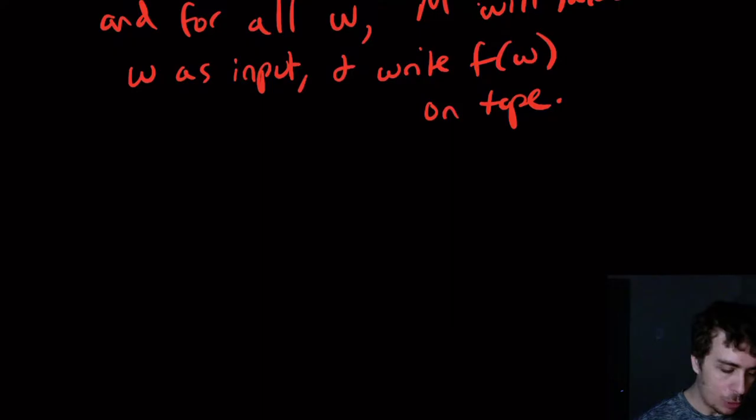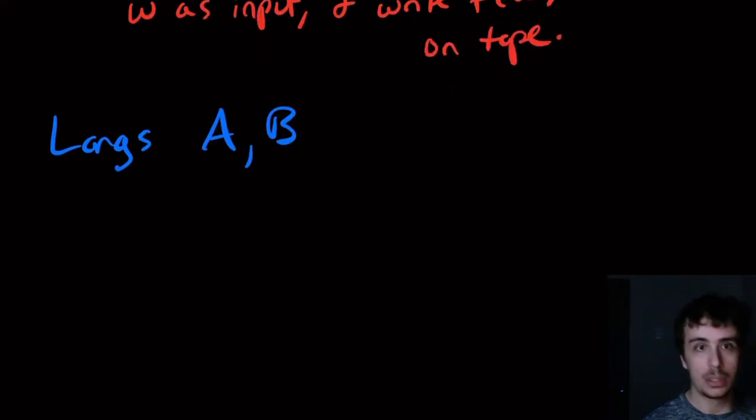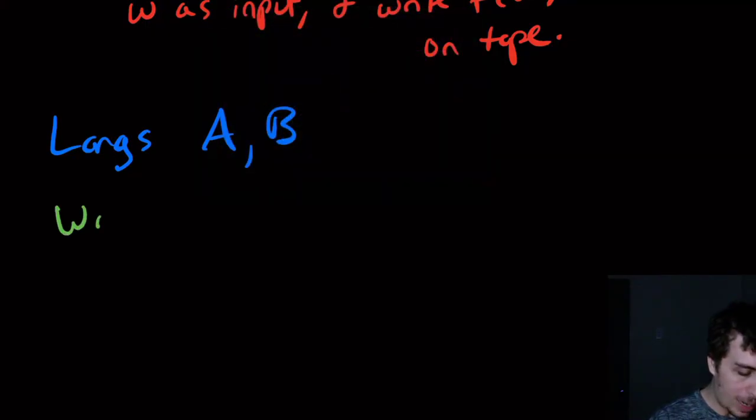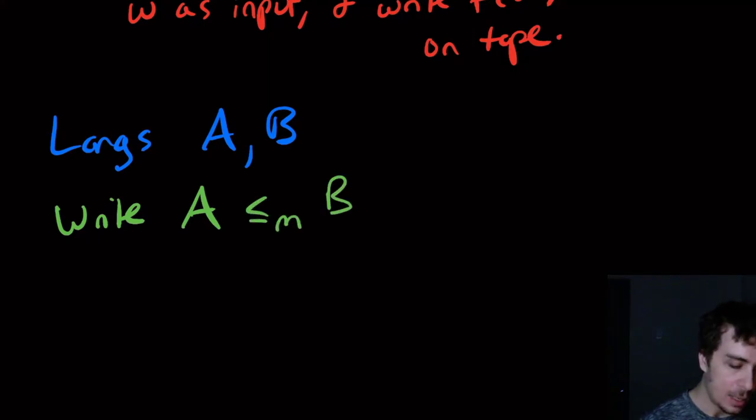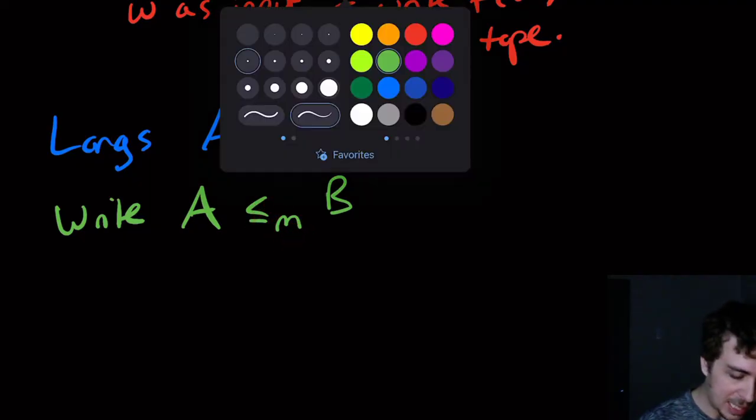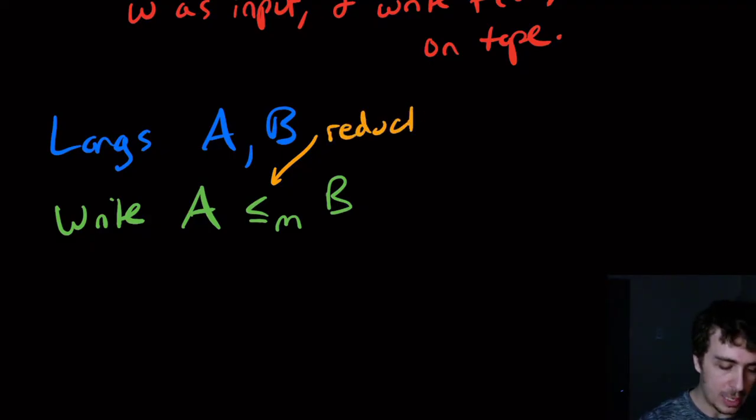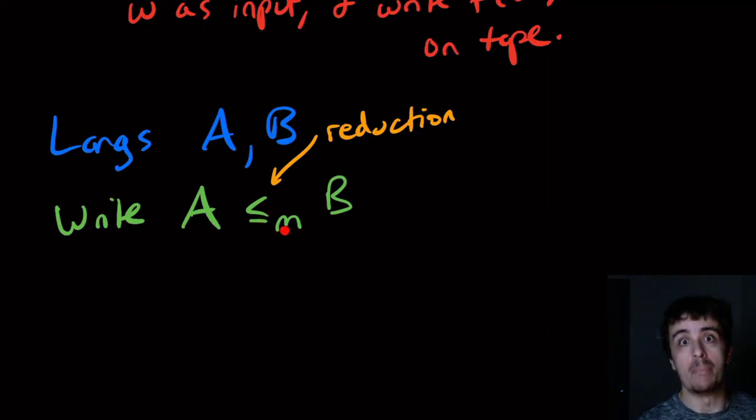So what is mapping reducible then? Let's say that we have two languages A and B. These can be just any arbitrary languages, and we're going to write A ≤_m B. The m means mapping reducible. The less than or equal sign in most computer science in this area actually means reducing or reduction of some kind. So this thing is what is called a mapping reduction.